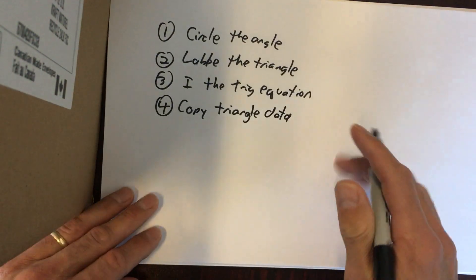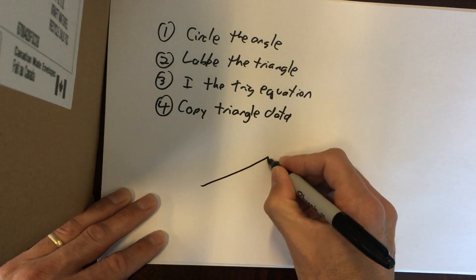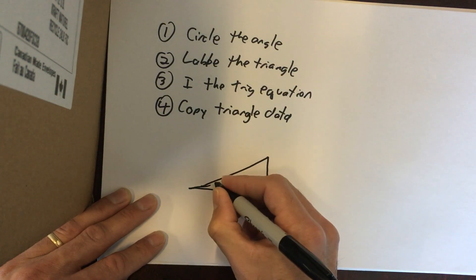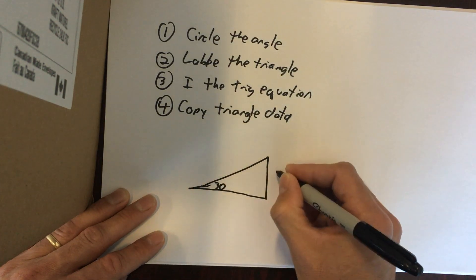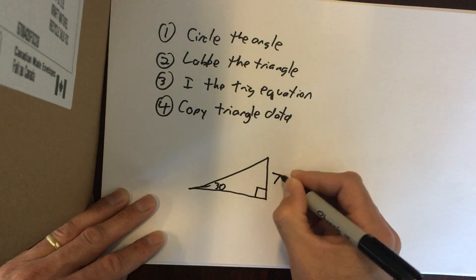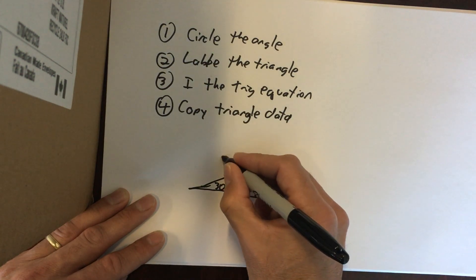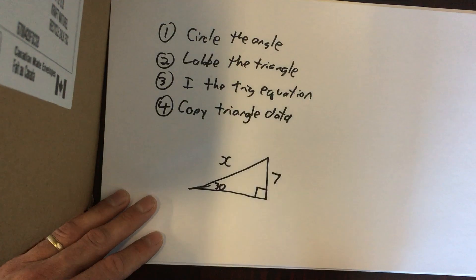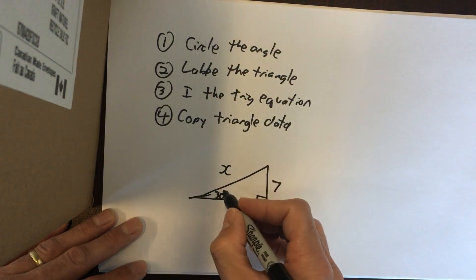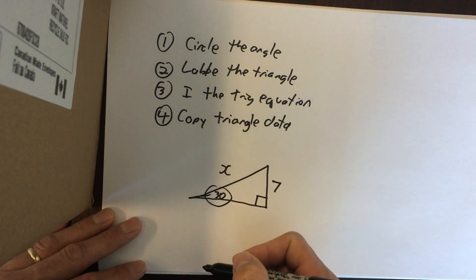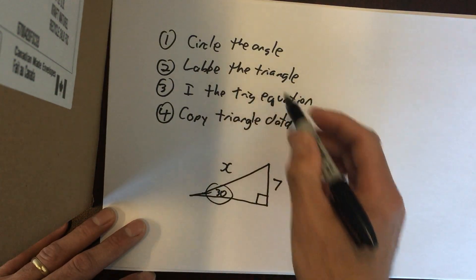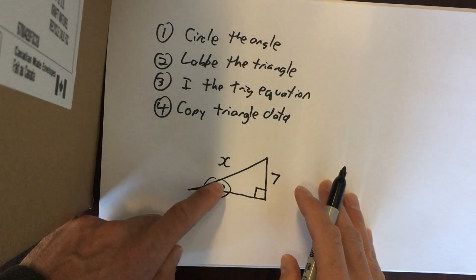Let's walk through an example using those steps. Here's a triangle — let's give this angle 30 degrees, make this side 7, and make this side length unknown. Step one: circle the angle that you know. Step two: label the triangle.